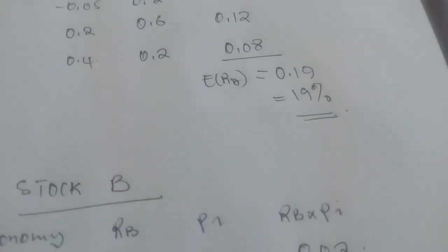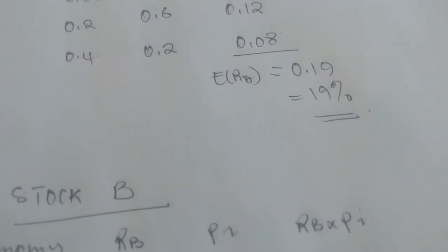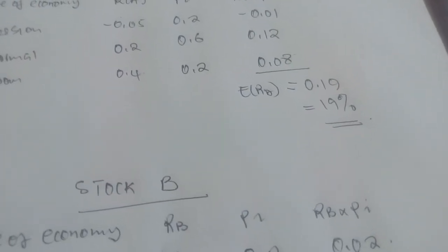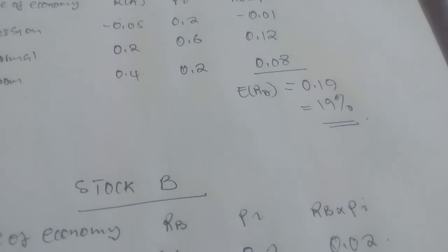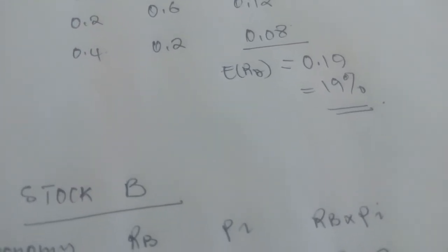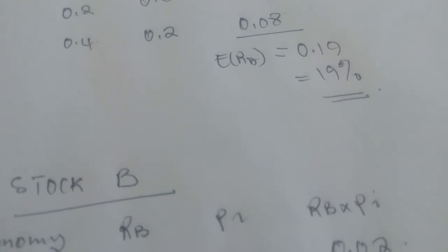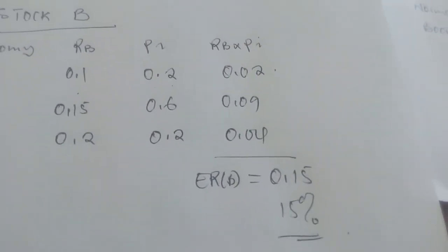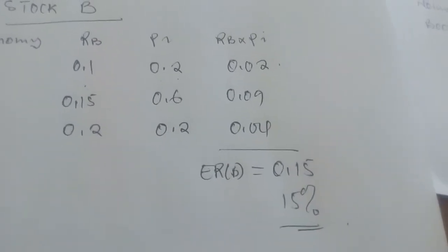Summing up all these numbers, we should be able to get the expected rate of return for stock B. We have 0.04 plus 0.09 plus 0.02, which is 0.15. This is the same as 15%. That's the easiest way of computing the expected rates of return.